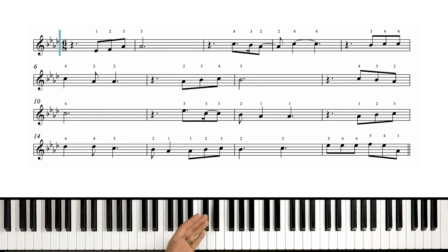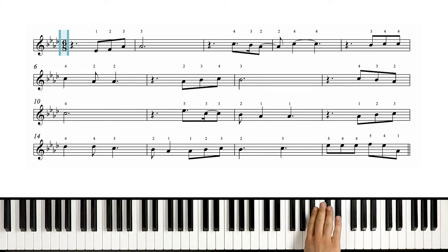The time signature is six-eight. Six beats per measure, and an eighth note actually gets the beat. So one, two, three, four, five, six. One, two, three, four, five, six. We say that we feel that in two because those are two groups of three-eighth notes. One, two, three, four, five, six. One, two, three, four, five, six. One, two.